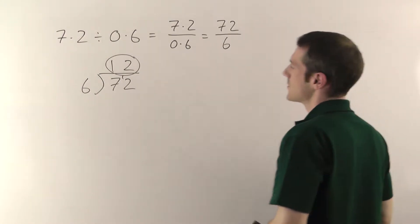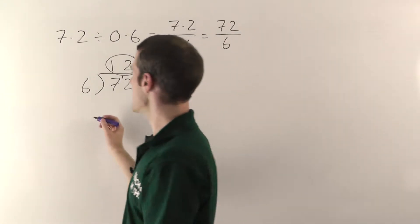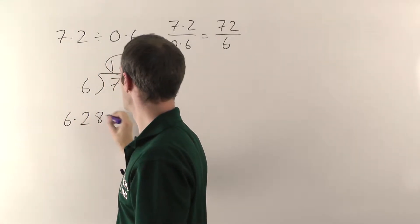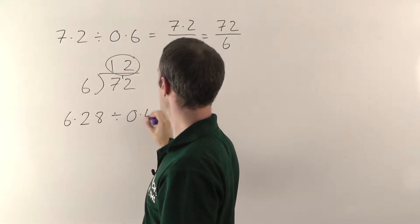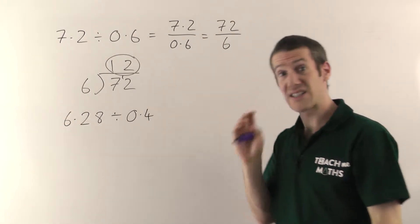So that's one example. Let's do another one quickly. I'll probably just fit it under here. So 6.28 divided by 0.4 this time. Picked a slightly harder one.